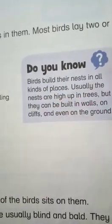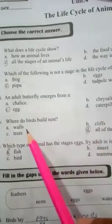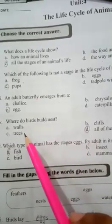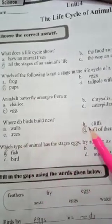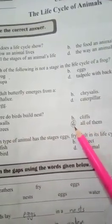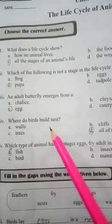Birds build their nests in all kinds of places. Our options are: wall, tree, cliff, and all of them. We will circle all of them, because birds build nests in all kinds of places.